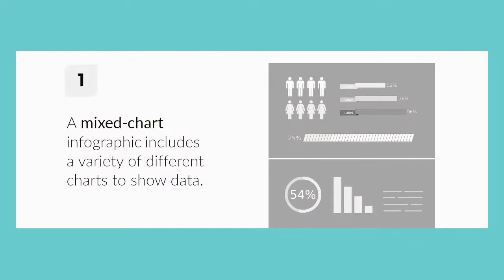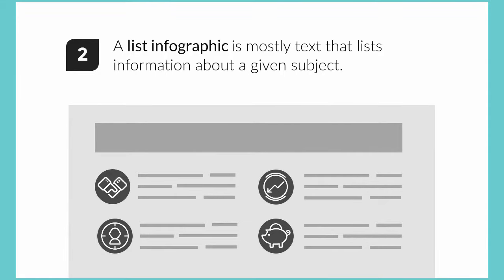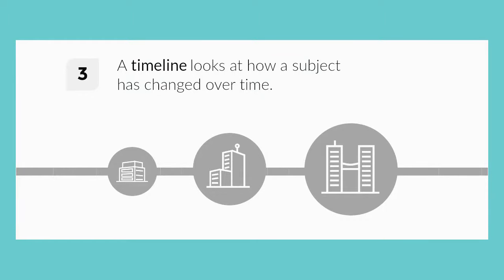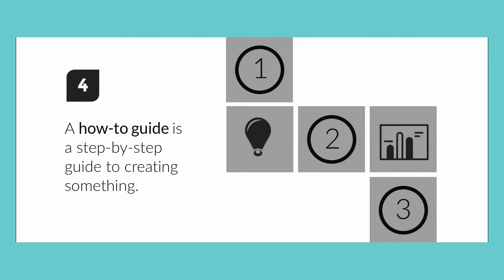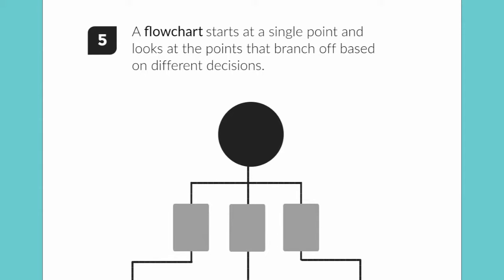There are 13 types of infographics. First is the mixed chart — it includes a variety of different charts to show data. Second is the list infographic — mostly text that lists information about a given subject. Third is the timeline infographic, which looks at how a subject has changed over time. Fourth is the how-to guide, a step-by-step guide to creating something — for example, how to make your crush fall in love with you. Fifth is a flow chart, which starts at a single point and branches off based on different decisions — in short, it tells you the flow.